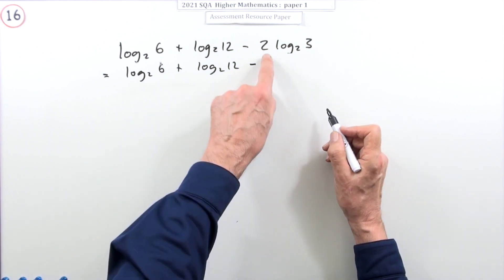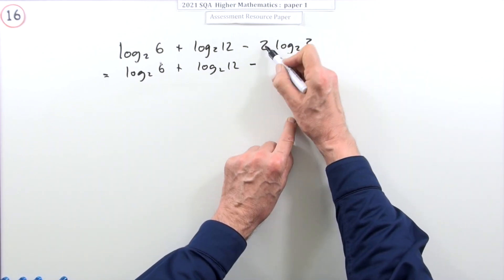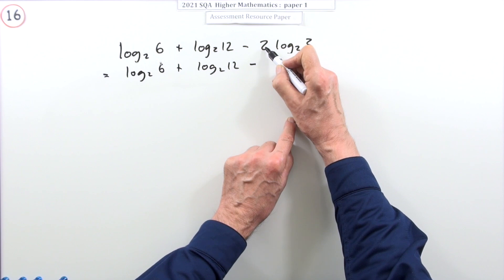One of the laws of logs is if you've got a power inside you can take it out as a multiplying number or vice versa. If there's a multiplying number, if there's a coefficient, take it inside as a power.